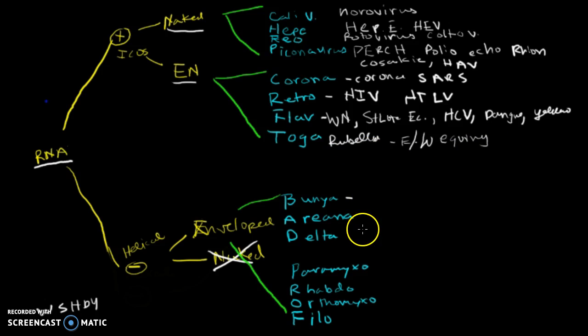And then you've got the bunyaviruses. So you've got your California encephalitis, just like your St. Louis encephalitis with the flavi. And then you've got your Crimea-Congo, hantavirus, and Rift Valley, which is also the sandfly virus. So you've got all of those here for bunyaviruses. Next two that we've got are the arenaviruses, which is the Lassa virus and the LCMV virus. And then you have your deltavirus, which is your hepatitis D virus.